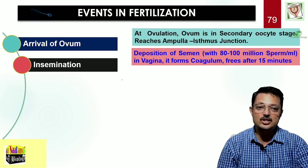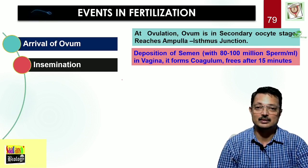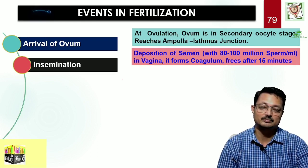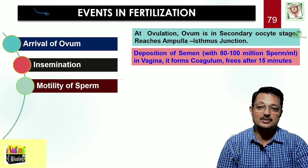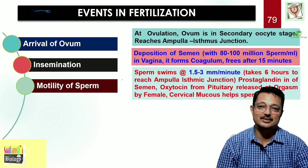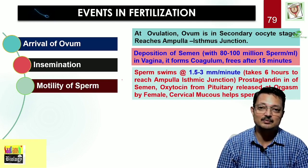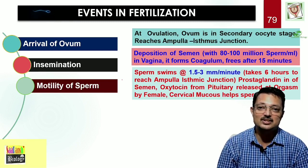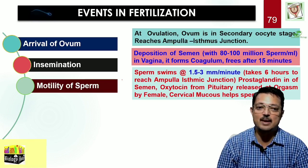There are around 80 to 100 million sperms per ml. Where it is deposited in the vagina, it forms a coagulum which liquefies after 15 minutes. The sperm has to travel to the ampullary-isthmic junction. As seen in its structure, the sperm has a tail and a middle piece containing the mitochondrial ribbon. It swims at the rate of 1.5 to 3 millimeters per minute, and it takes around 6 hours to reach the ampullary-isthmic junction.